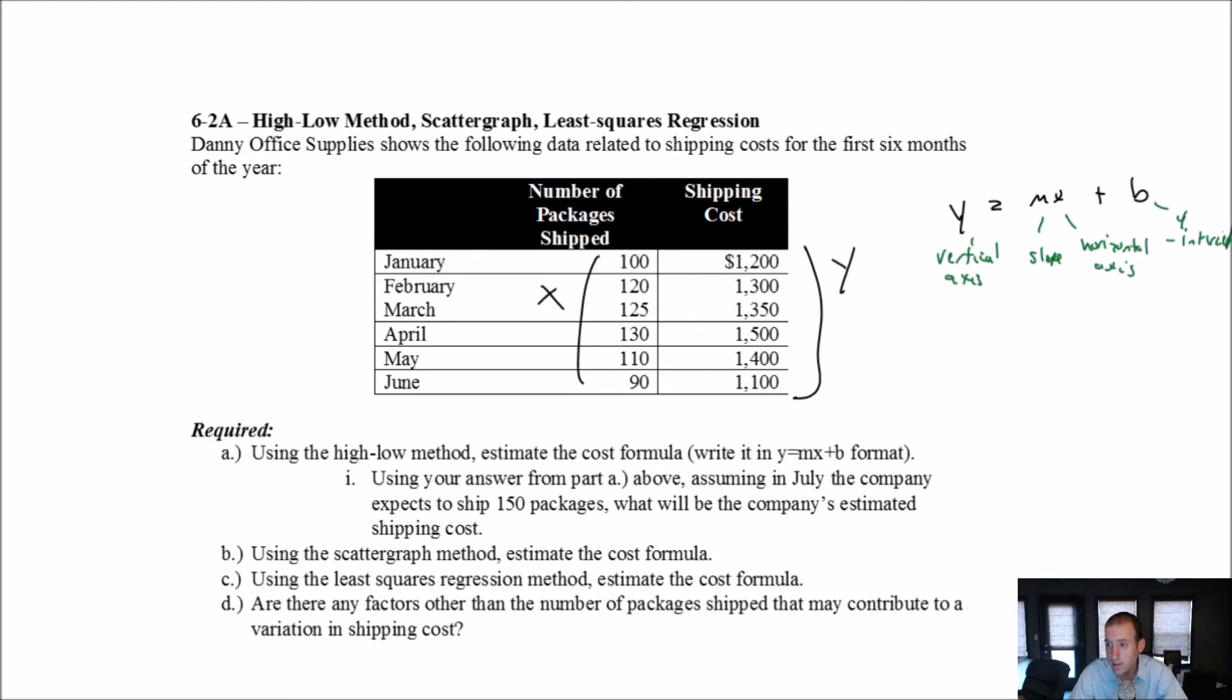So if you're talking about drawing a line for your linear programming class or your algebra class, in accounting it's a little bit different. And this is what you'll really want to know for your class. Y is the cost. It's always, you can see shipping costs is charted to y. Y is the cost of whatever we're looking at. M is cost per unit. X is the activity level. And B is the fixed cost.